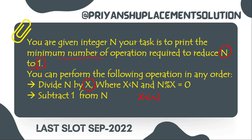The condition for dividing N by X is: N percent X must always equal zero. The second operation is: subtract — you can perform N equal to N minus one. So we have these two steps, and the modulo condition must be followed for the division operation.